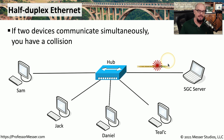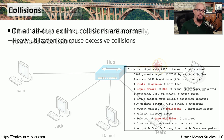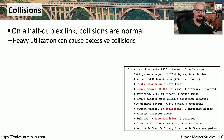When this happens, these devices recognize that a collision has occurred. They both wait a random amount of time and then try retransmitting again. If you're on a half-duplex network, collisions are perfectly normal — it's how ethernet operates at half-duplex.